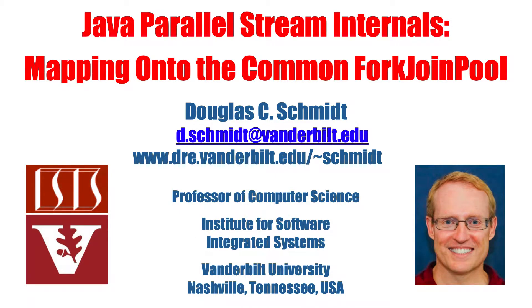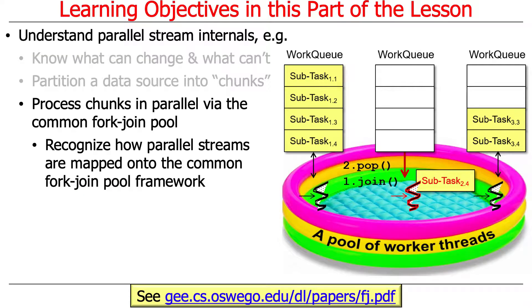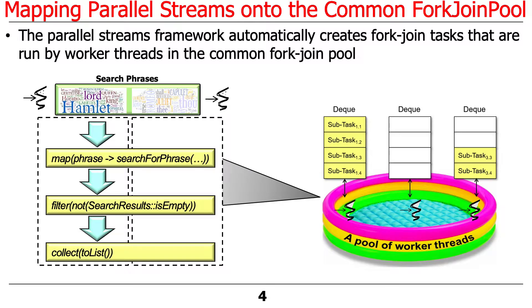So if you recall where we left off last time, we've been talking about the common fork-join pool, and I talked a little bit about the role it played in parallel streams. What we're going to do today is show how parallel streams as a functional programming abstraction is mapped onto the underlying common fork-join pool framework by the streams framework — the streams implementation. This is just to recap: if you've got a parallel stream where things need to get broken up into chunks and then mapped onto the underlying fork-join pool, that's what the parallel streams framework does.